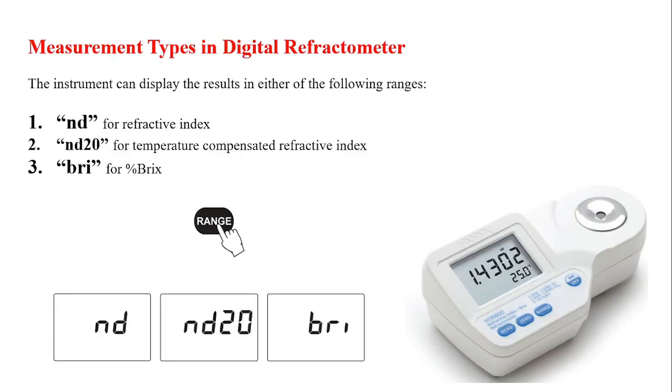There are three types of measurements that can be done through refractometer. First is ND for refractive index, second one is ND20 for temperature compensated refractive index, and the last one is BRI, that is for percentage Brix.